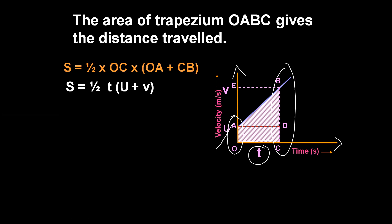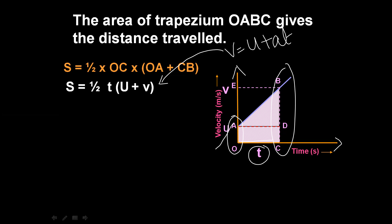Now we will substitute this into the first equation of motion. What is the first equation of motion? V is equal to U plus AT. This is the final velocity. We will substitute the value in the first equation of motion. S is equal to half into T into (U plus V). We substitute V with (U plus AT).